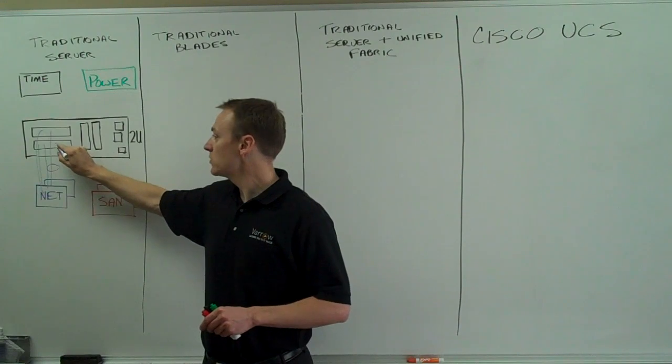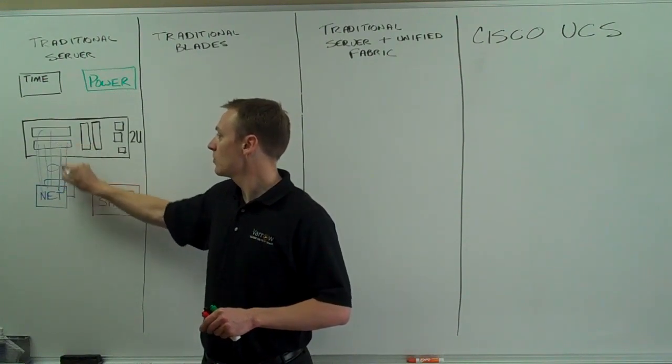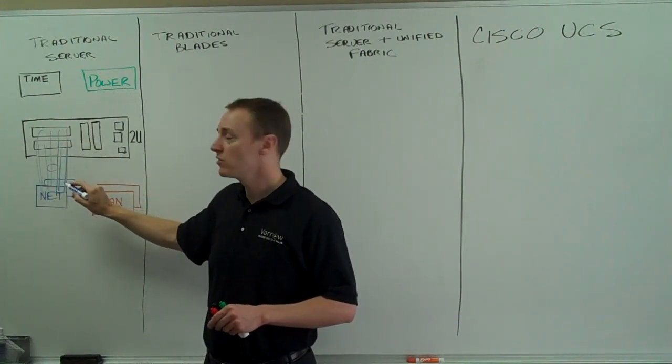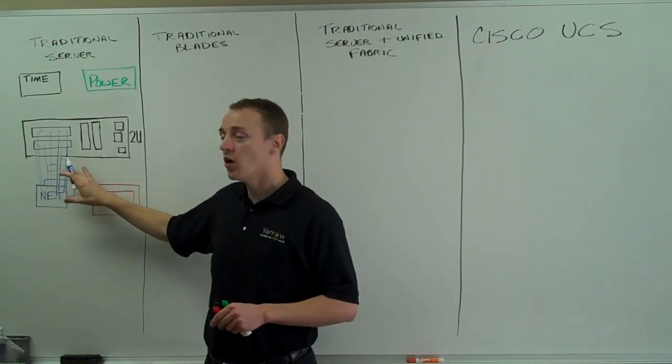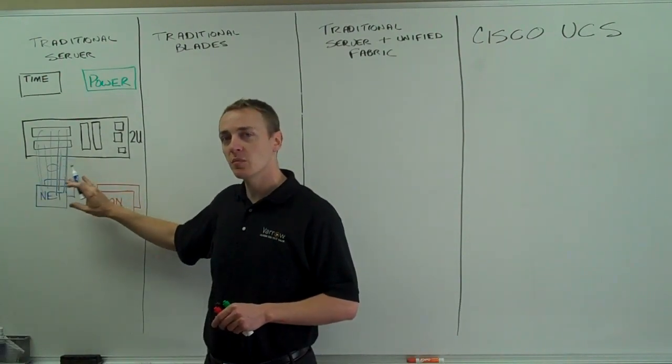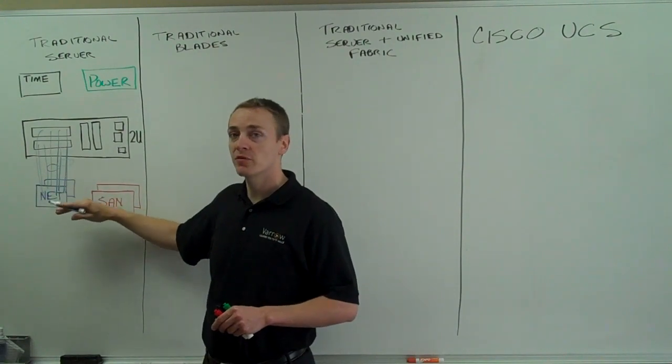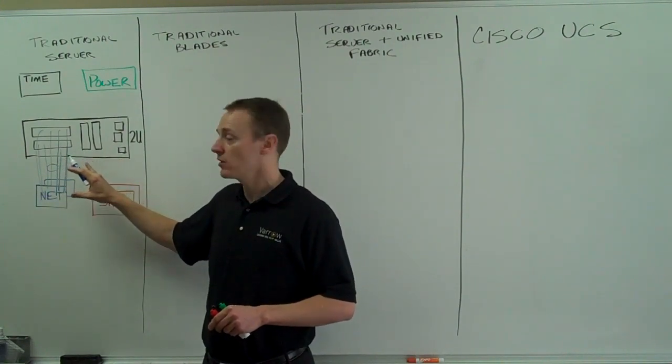I'm going to take the remaining four NICs, load balance those, and use those for VM network traffic. I'm also going to trunk each of those ports in my switches and present the proper VLANs up for virtual machine network traffic.